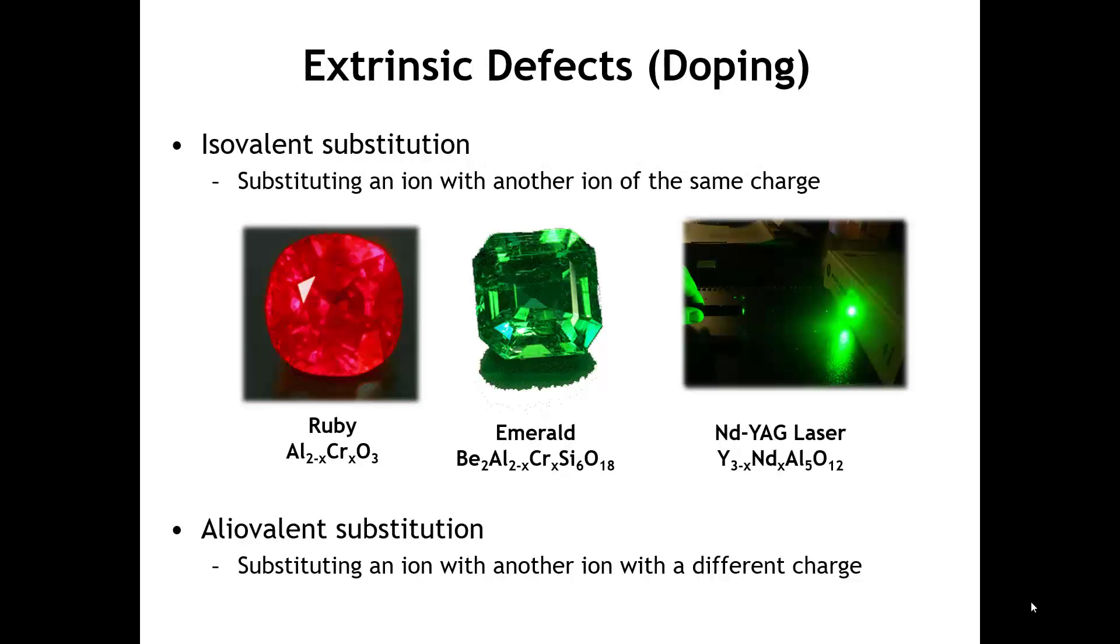There are two kinds of extrinsic defects in ionic or polar covalent compounds. Isovalent substitution is when the substituting ion has the same charge as the ion it is replacing. In the gemstones ruby and emerald, we replace an aluminum ion, which has a 3-plus charge, with a chromium ion that also has a 3-plus charge. In a YAG laser, we replace yttrium ions with neodymium ions, and both have a 3-plus charge. These are important examples of isovalent substitution.